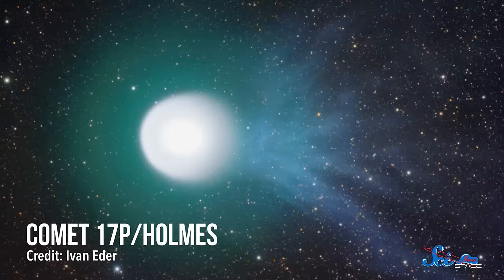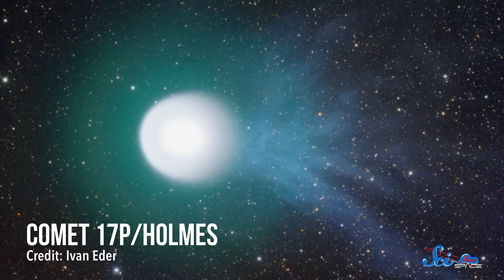Comets formed four and a half billion years ago, when the Sun and our planets were still just a big hot cloud of primitive space crud. Planets and asteroids have changed a lot over the years because of things like solar radiation, collisions, and plate tectonics. But comets are almost perfectly preserved.